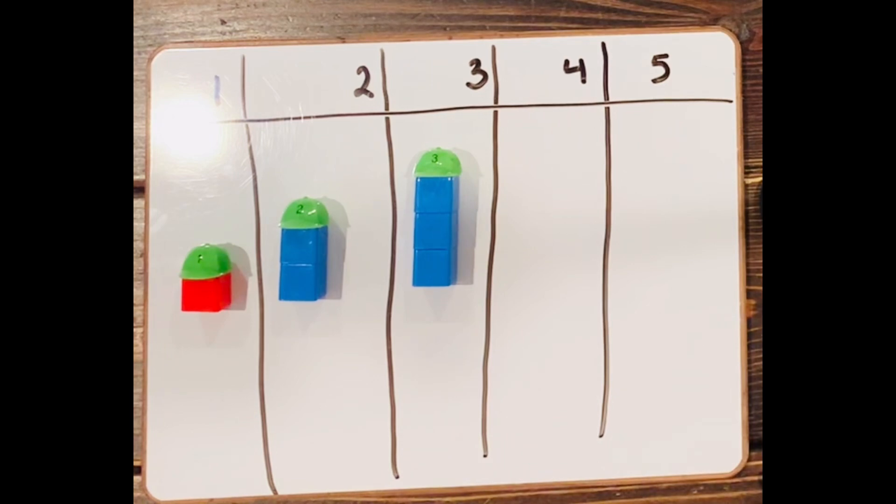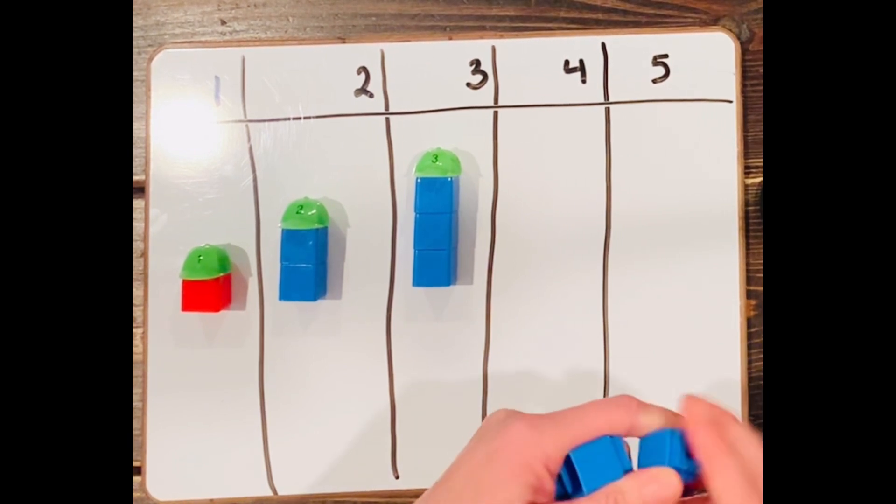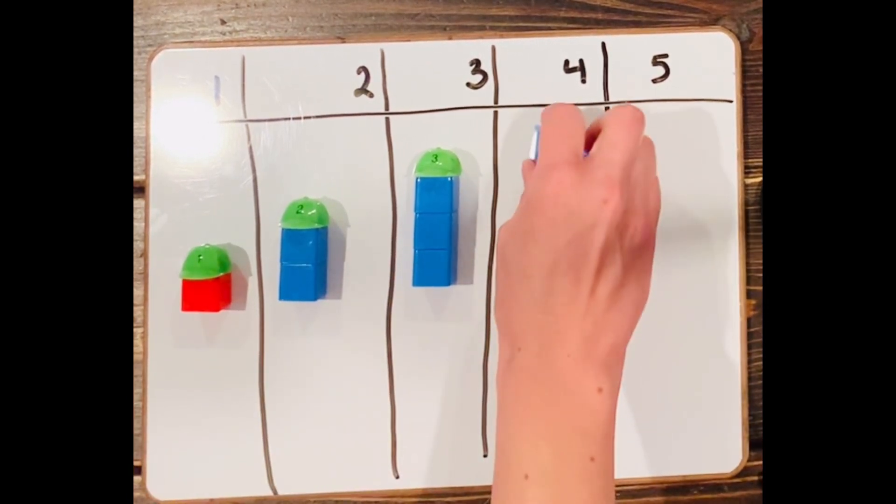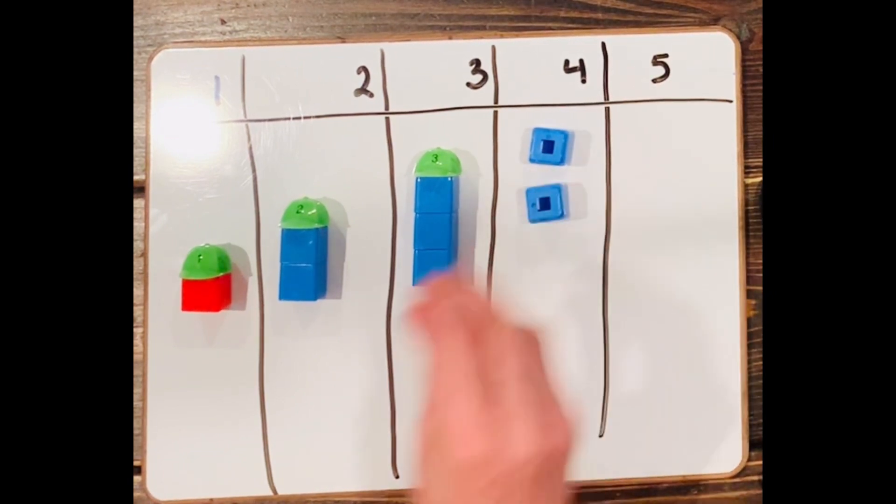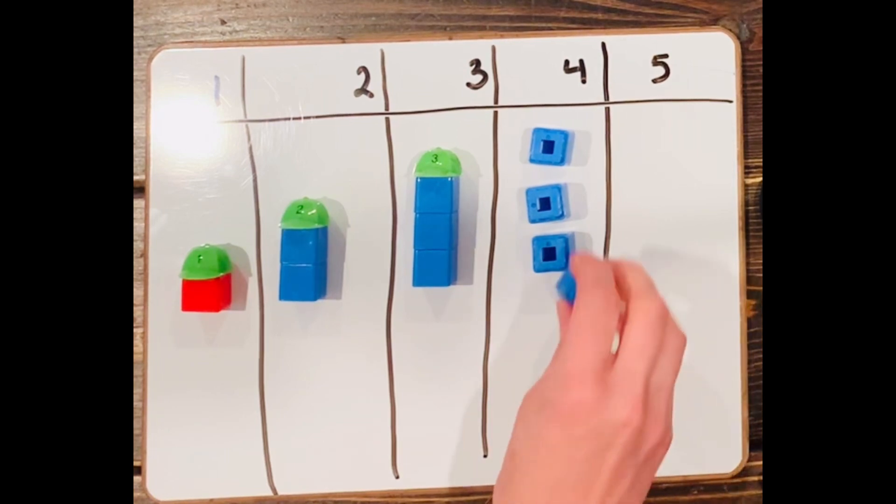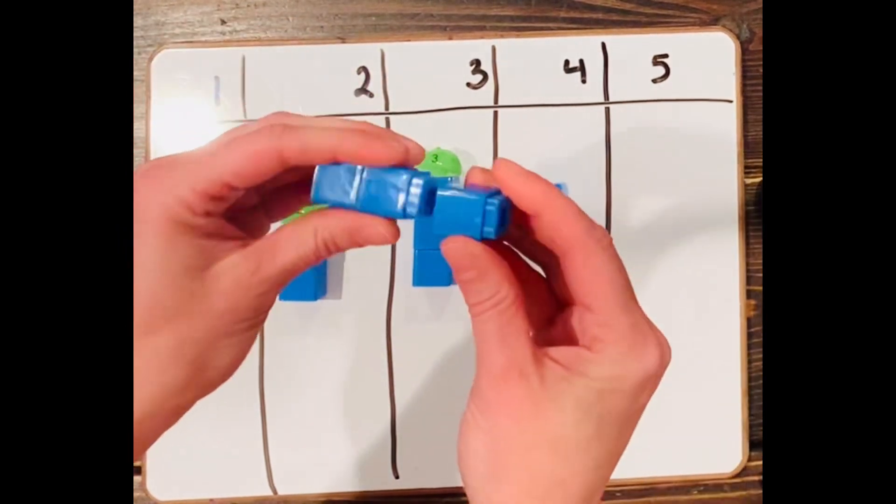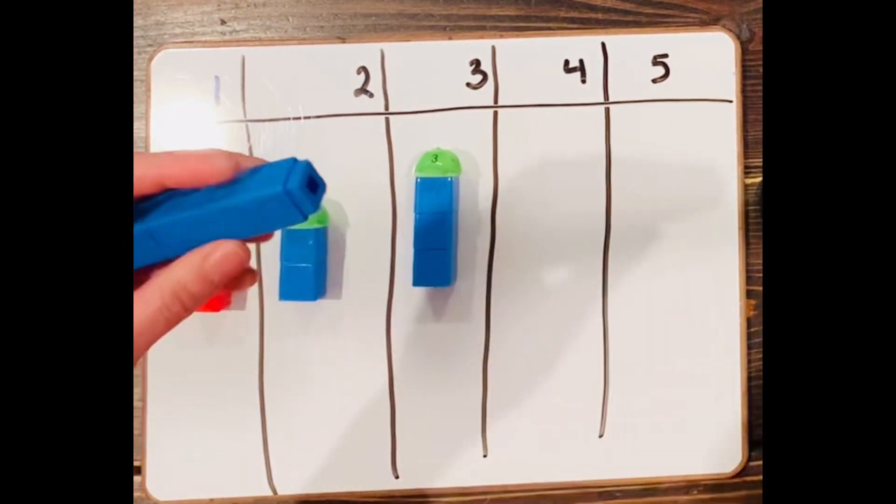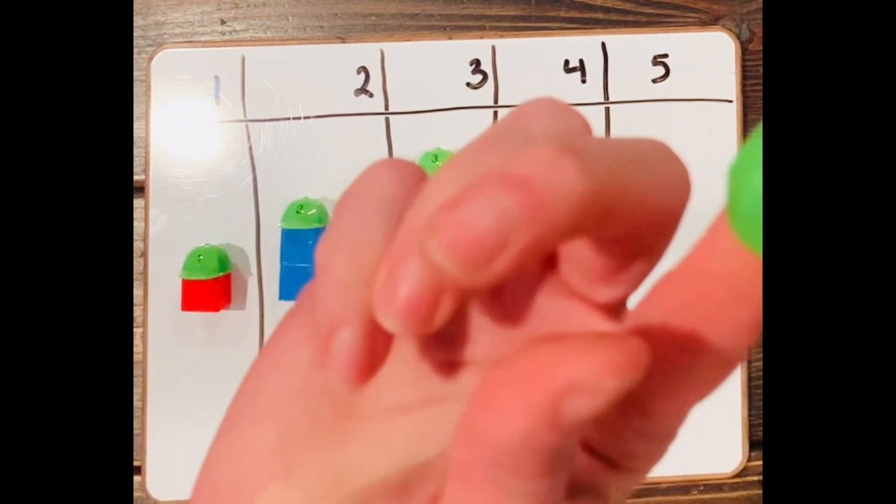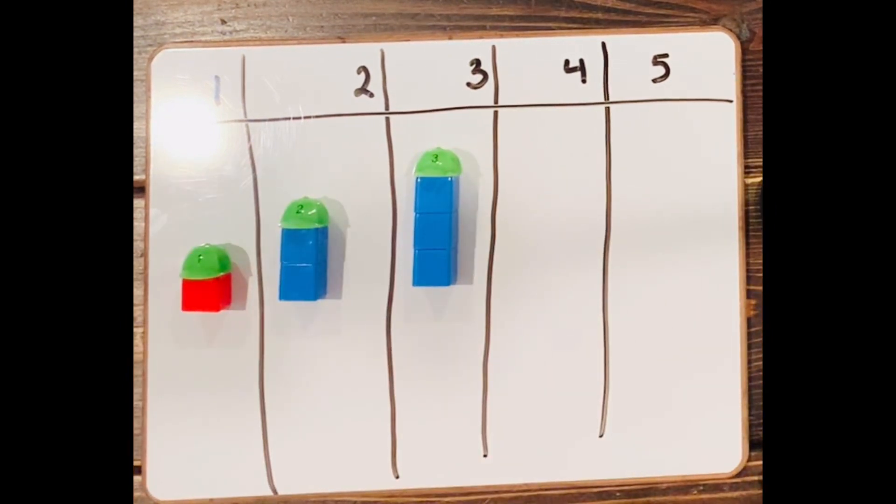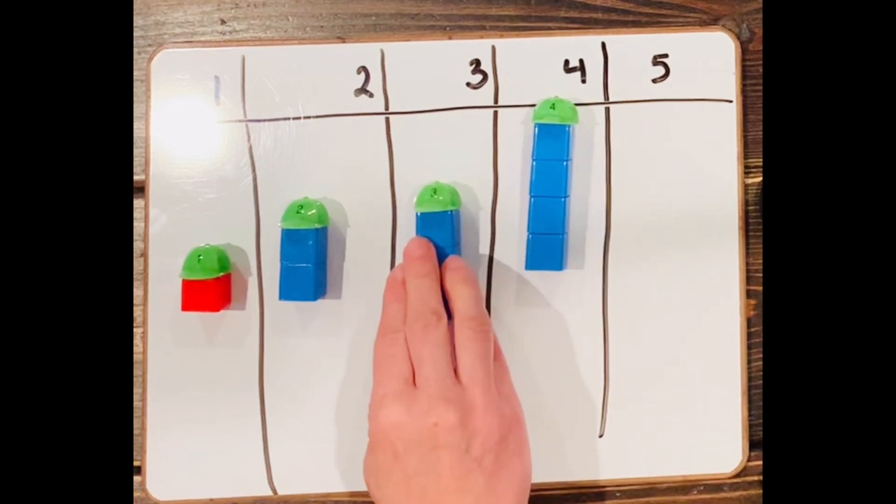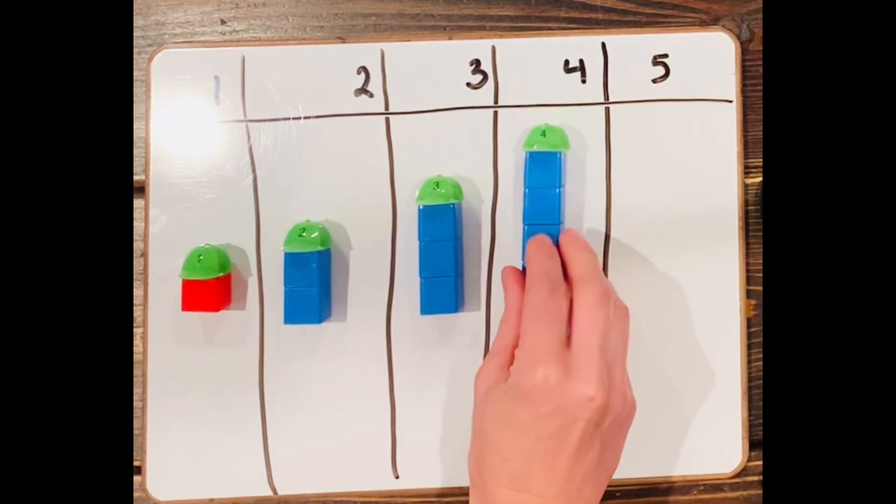And then what's next? Four. Let's build our four. Count with me. One, two, three, four. And now let's link them together. One, two, three, four. I have my little four hat here for my little guy. You can see we're getting taller and taller.